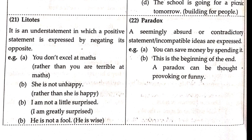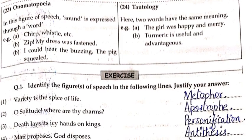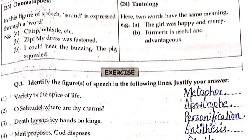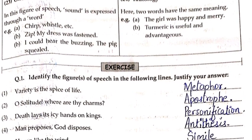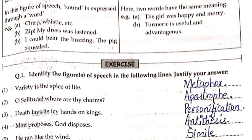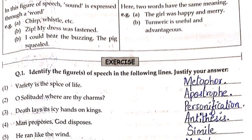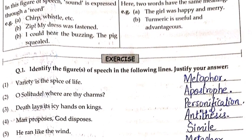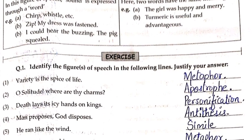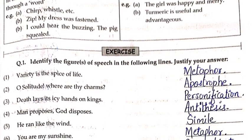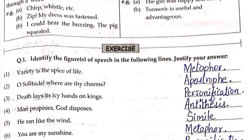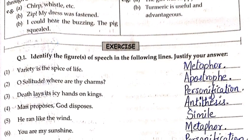A paradox can also be thought-provoking or funny. Onomatopoeia is a figure of speech where sound is expressed through a word — words which create a sound are used. Examples: crisp, whistle, zip ('Zip! My dress was fastened'), buzzing ('I could hear the buzzing'), and 'The pig squealed.' These sound words are used for greater poetic effect and this is called onomatopoeia.